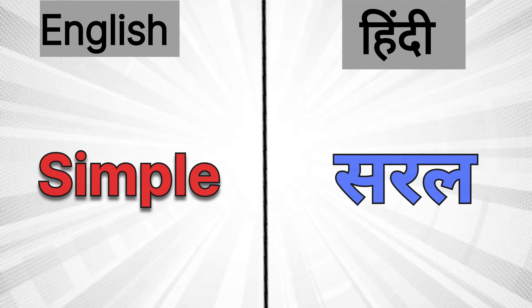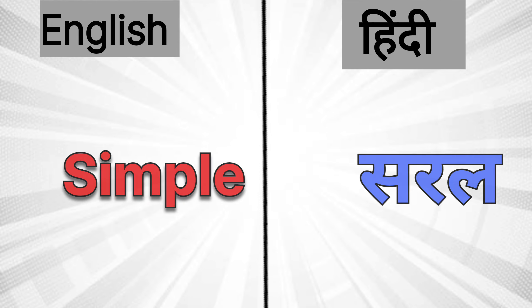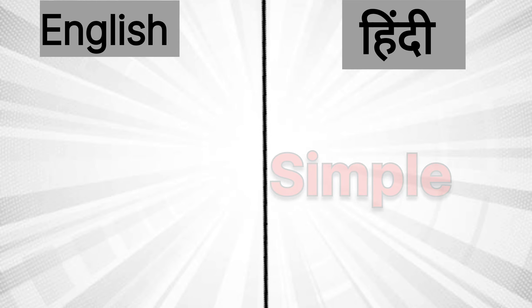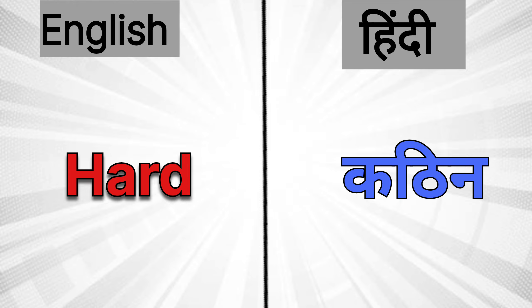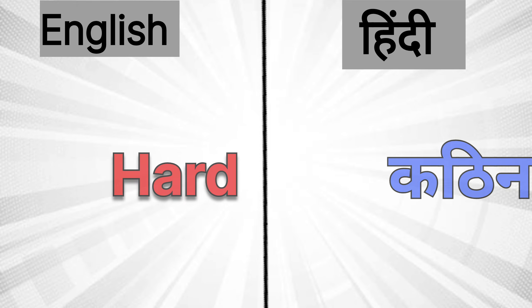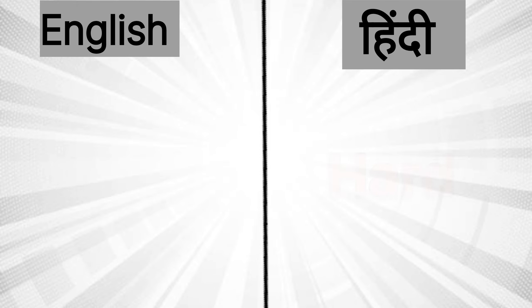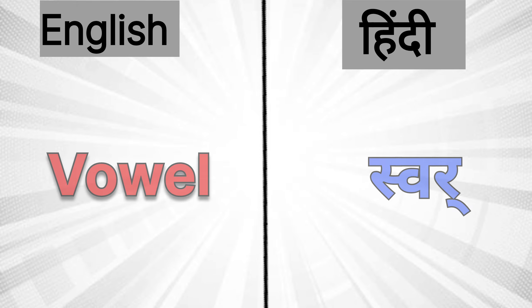In English: 'simple' — In Hindi: soral (saral). In Hindi: 'hard' — In Hindi: cotton (kathin). In English: 'wobble' — In Hindi: swear.